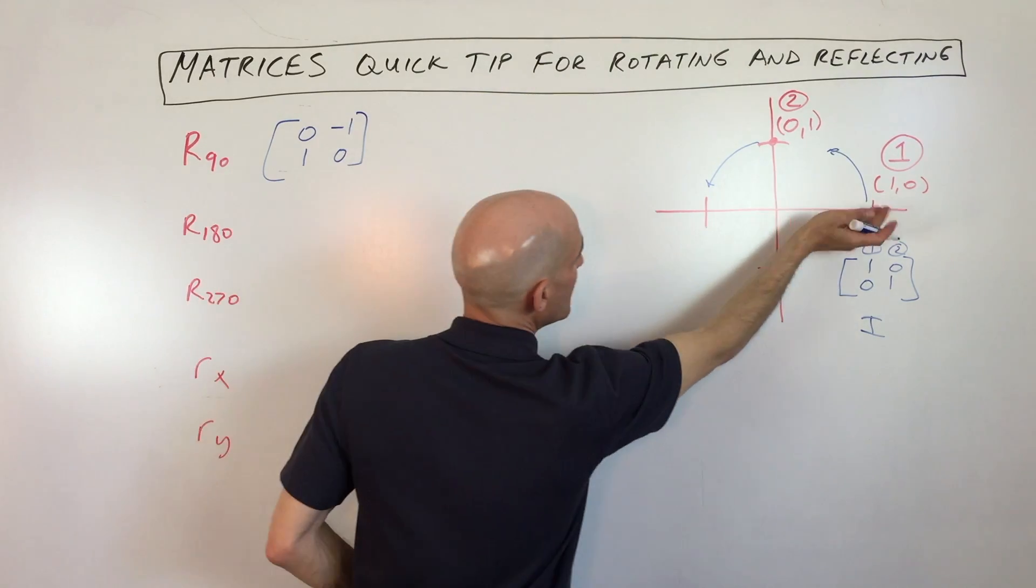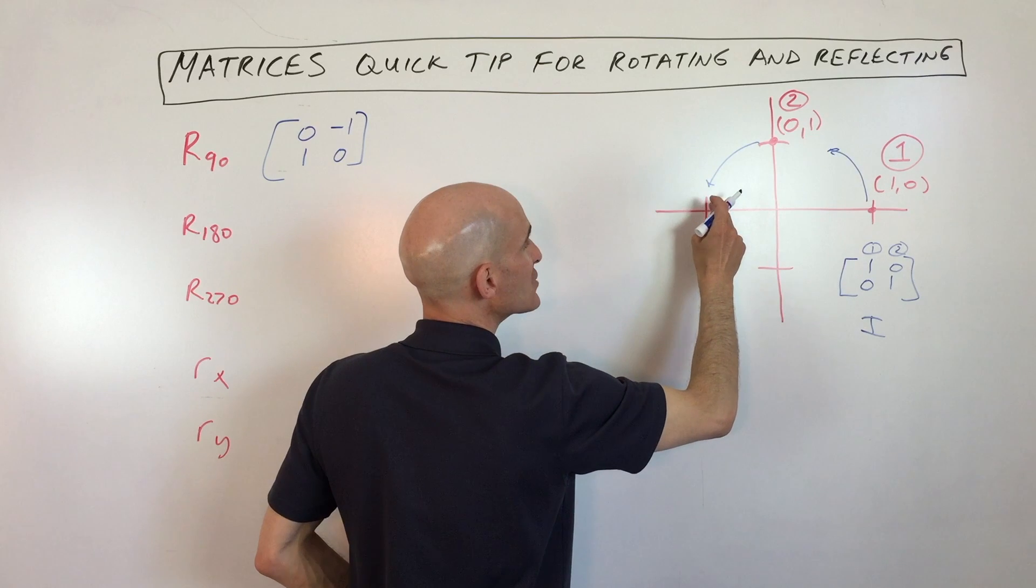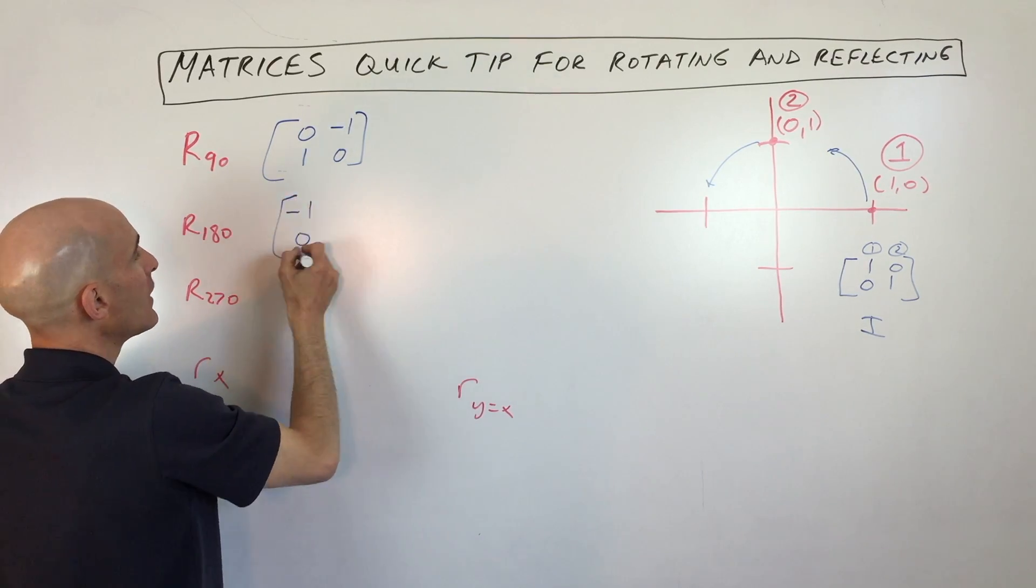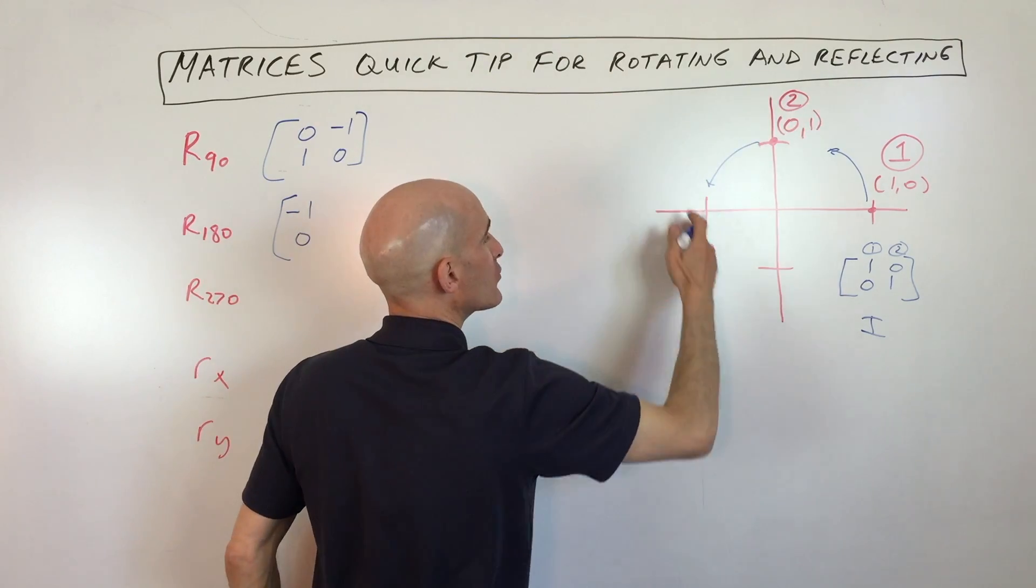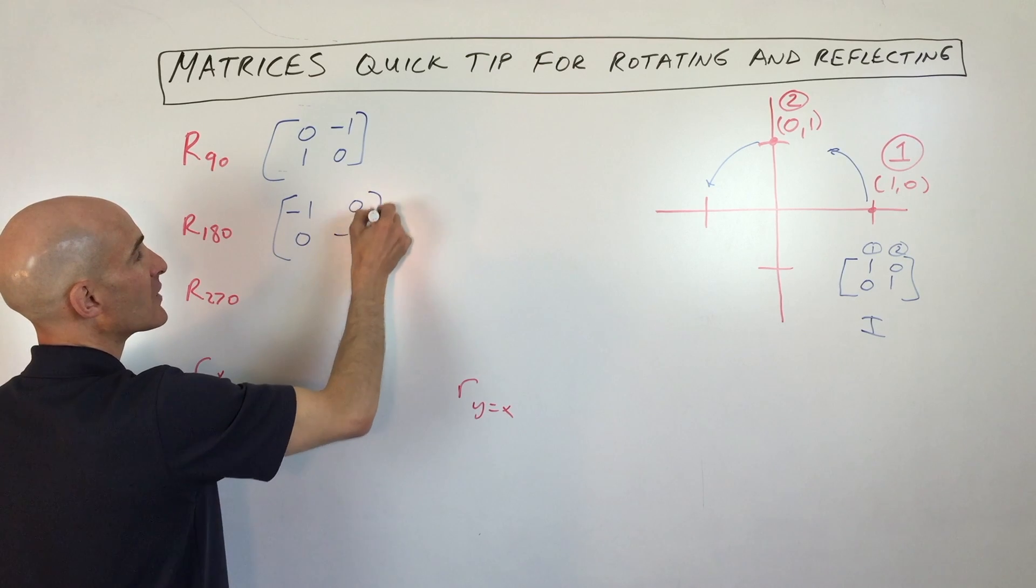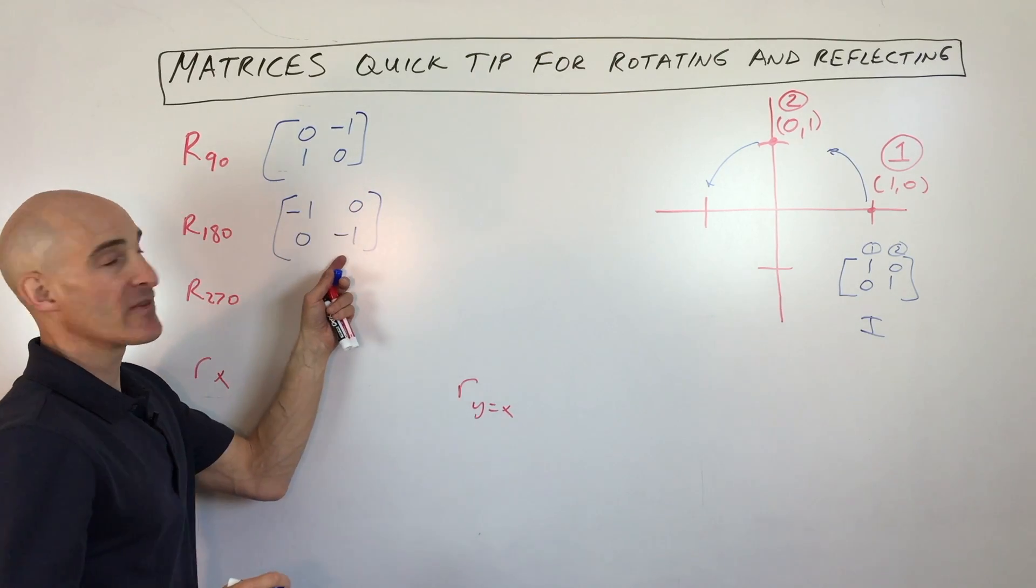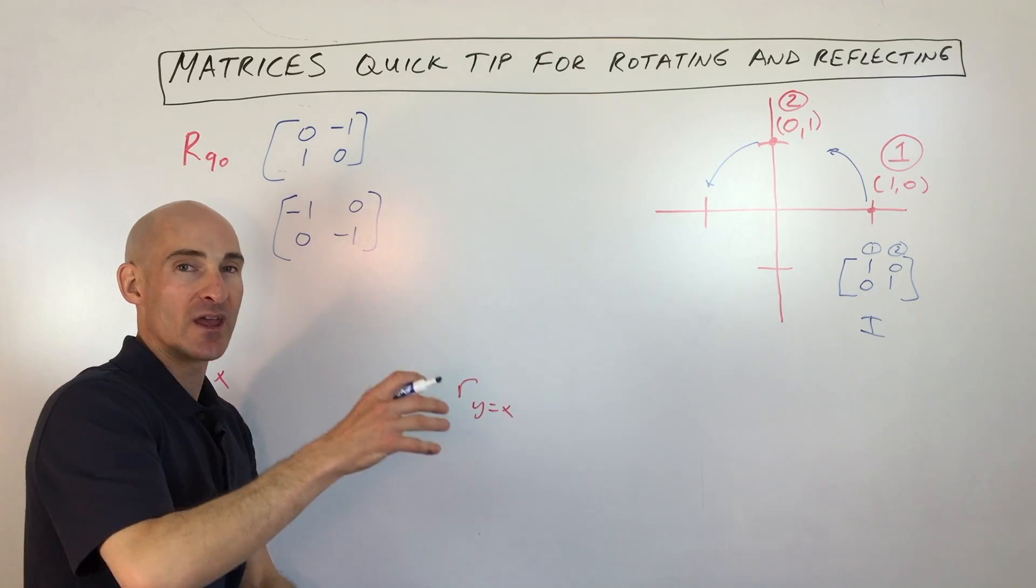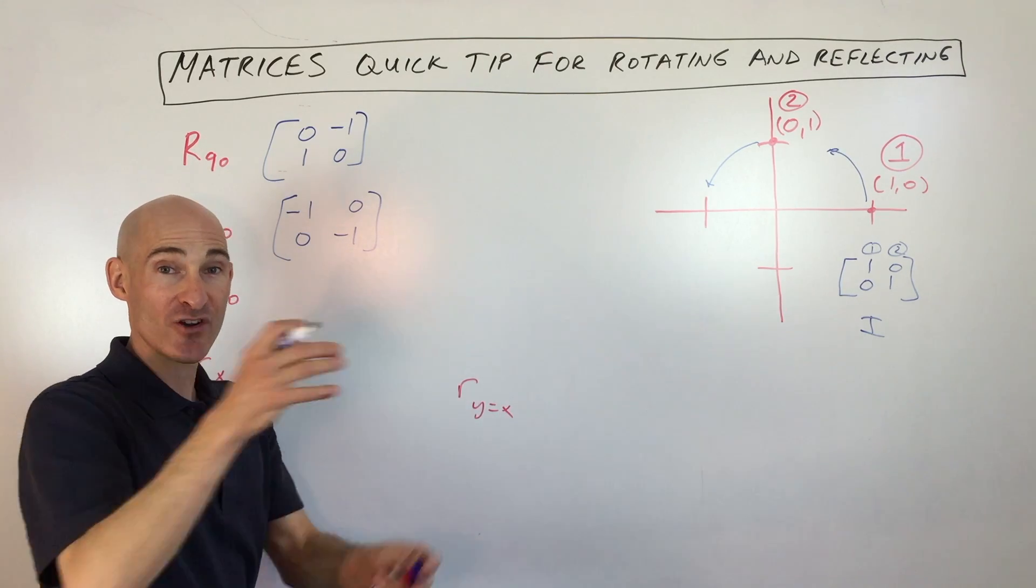Let's look at 180. So if we rotate 180, this point is going to move half a rotation over to here, which is going to put us at negative one, zero. Whereas point number two is going to rotate all the way down to here, and that's a coordinate that's going to be zero, negative one. So by multiplying by this matrix, you're going to be able to rotate pre-image to its image 180 degrees.